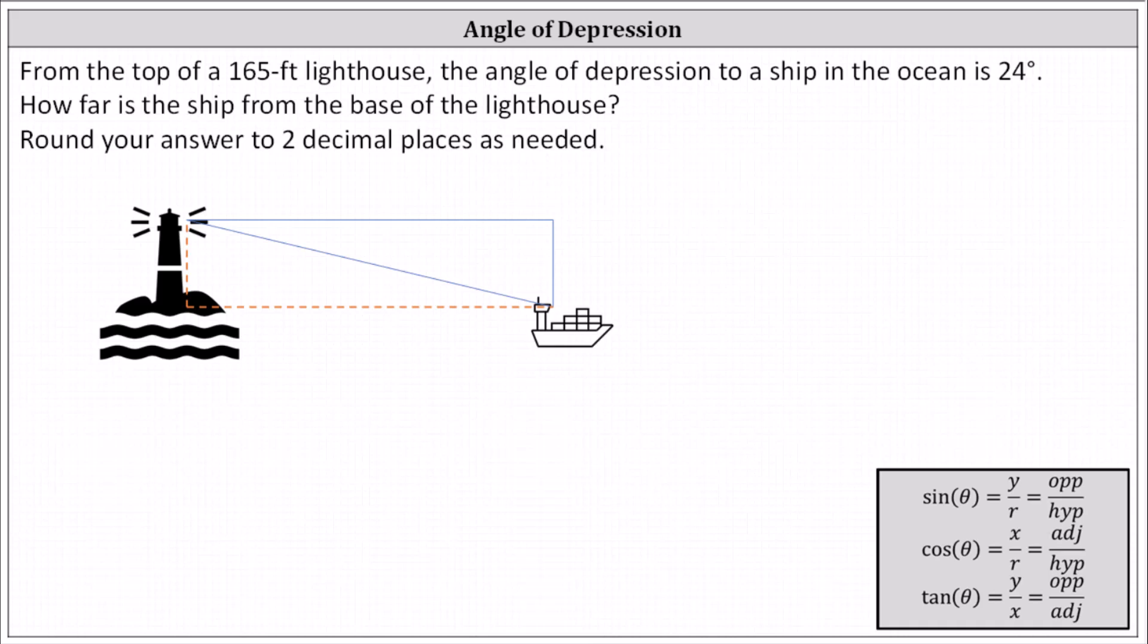Looking at the diagram below, the angle of depression is the angle looking straight out from the lighthouse down to the ship, which is this angle here, which is 24 degrees.